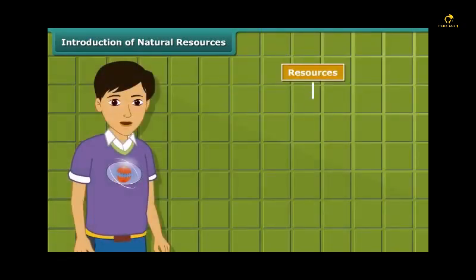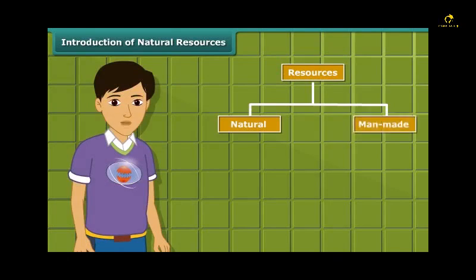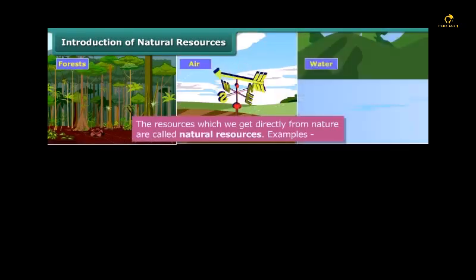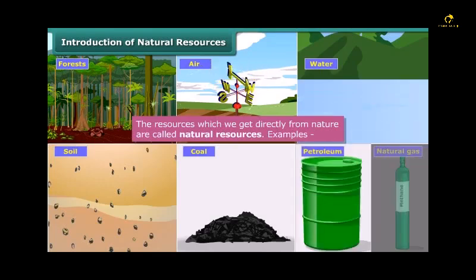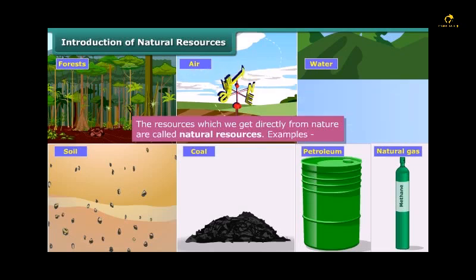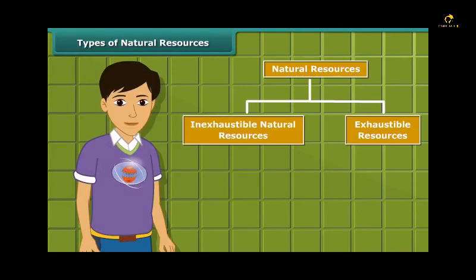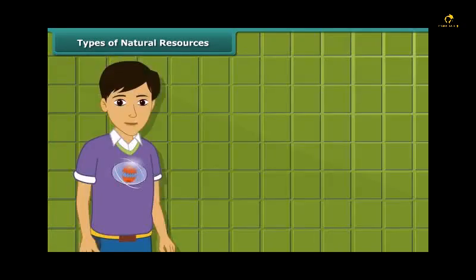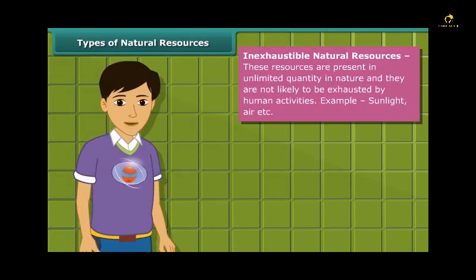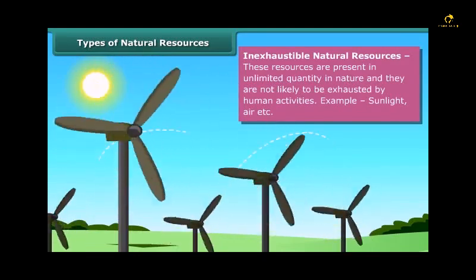Resources are of two types: natural and man-made. Natural resources such as forests, air, water, soil, coal, petroleum, and natural gas are directly obtained from nature. Natural resources can be broadly classified into two categories: inexhaustible natural resources and exhaustible resources. Inexhaustible natural resources are present in abundance; hence, it is unlikely that they will be exhausted by any human activity. Sunlight and air are examples of such resources.